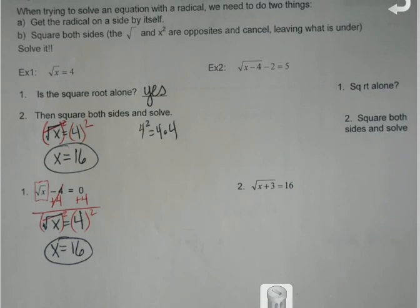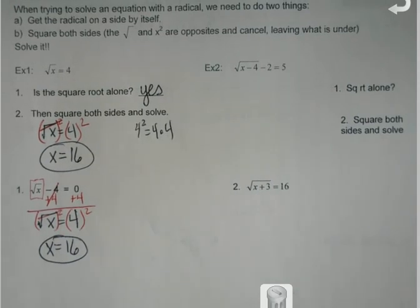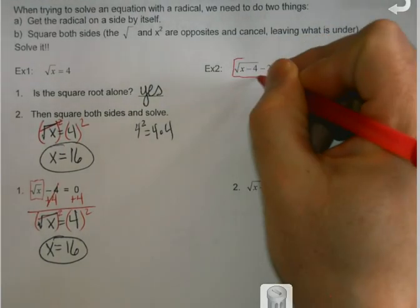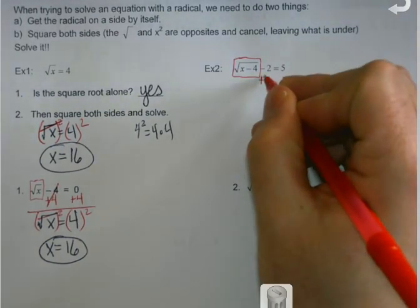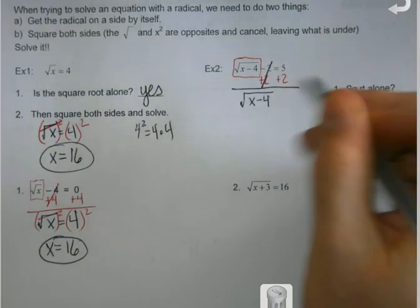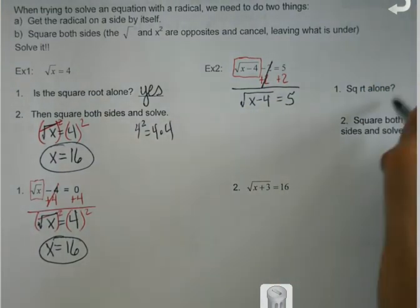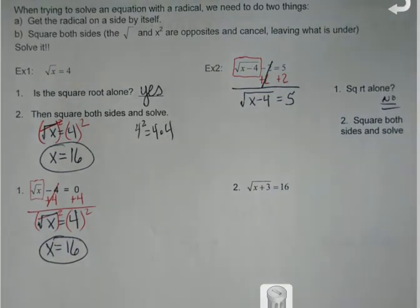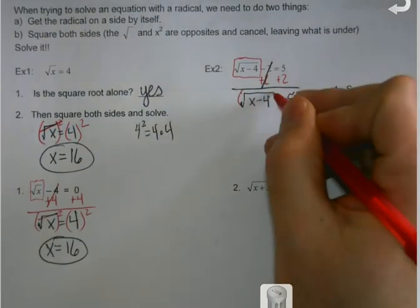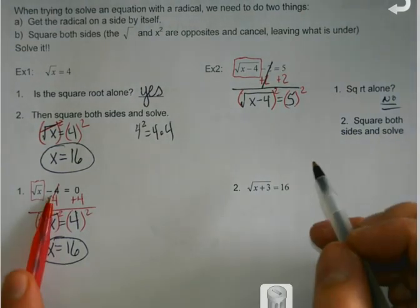But again, when I talk about the square root being alone, that can mean some different things. So like, for instance, let me pop back up towards the top. Is my square root alone? Well, no, it wasn't. Because here's my square root. I needed to get the minus 2 out of there first. Now you're like, do I have to get the minus 4 out of there too? Here's the difference with this one. Here, that minus 4 is underneath the square root. It's different. In that case, when I go to square both sides, since it's under the radical, I'm going to have to deal with it later. So a slight difference here. It's not under the radical. Here it is.